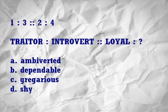Now let's look at a 1-3-2-4 analogy. Traitor is to introvert as loyal is to: A. Ambiverted, B. Dependable, C. Gregarious, D. Shy. There doesn't appear to be any clear connection between traitors and introversion, so this is probably not a 1-2 analogy but a 1-3 analogy, assuming wordplay isn't involved. Note that a traitor is by definition not loyal, so we need a contrasting term for introvert. An introvert is characteristically reserved — not gregarious, in other words, a highly social person, a mixer. C. Gregarious is clearly the best answer.